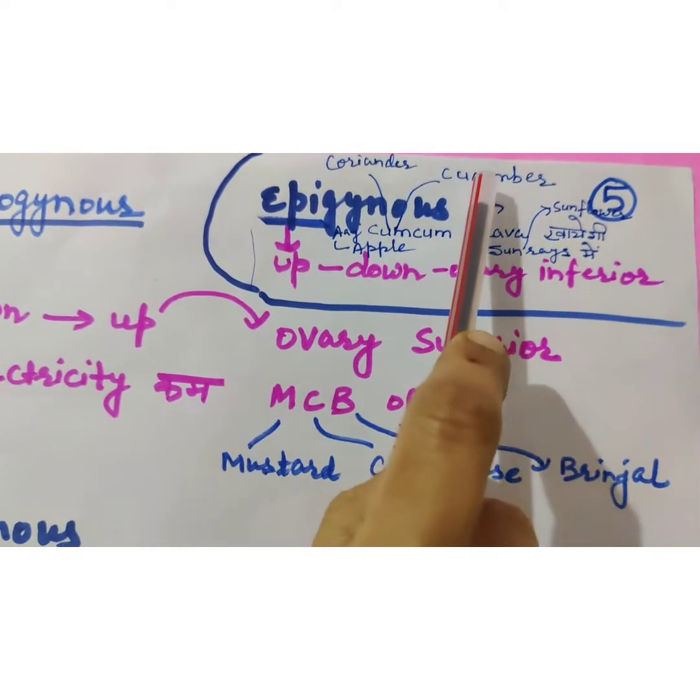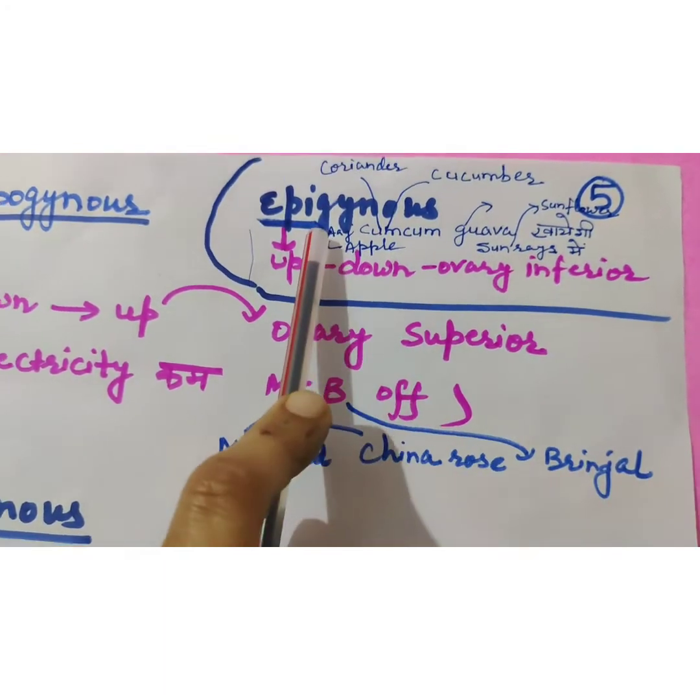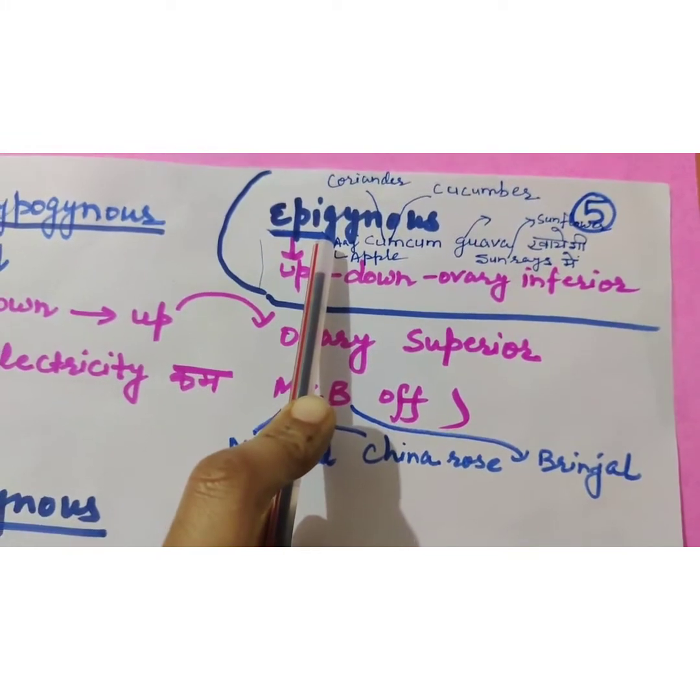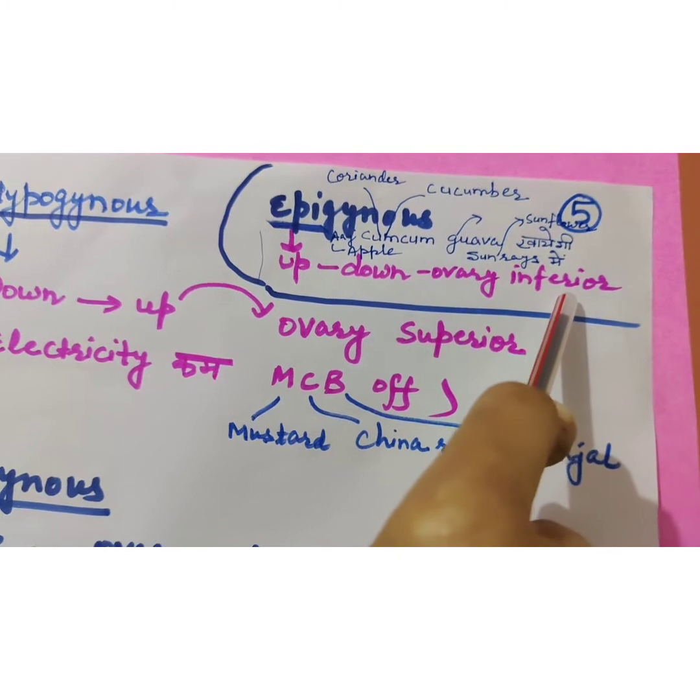So coriander, cucumber, apple, guava, sunflower. They have epigynous type of flower in which there is inferior ovary is present.